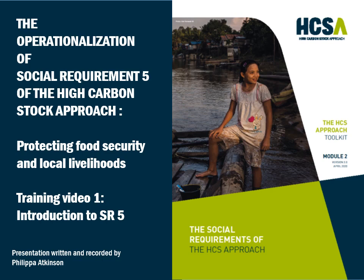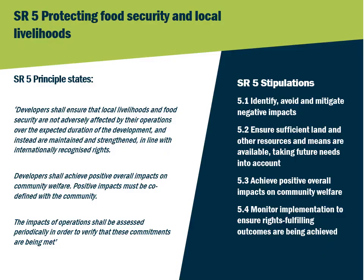Articles in both these mechanisms refer directly to the protection of food security and livelihoods. The full text of the SRs, including SR5, can be found in Module 2 of the HCS Toolkit, which is available on the HCSA website. The principle of SR5 is set out here. It can be broken down into four separate components or stipulations, all of which must be fulfilled for these rights to be effectively protected by land developers.